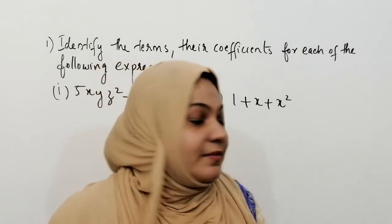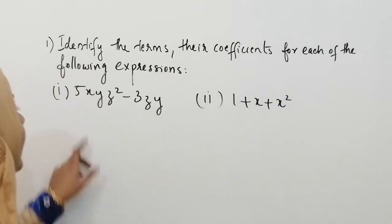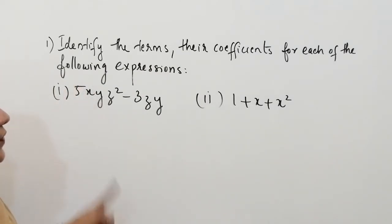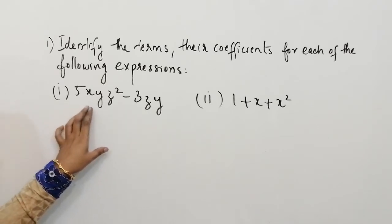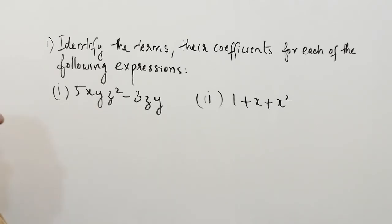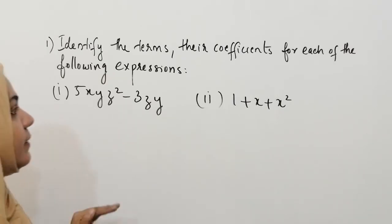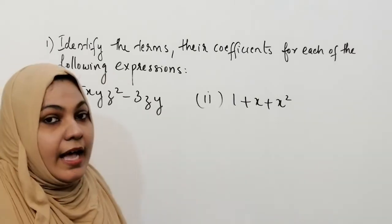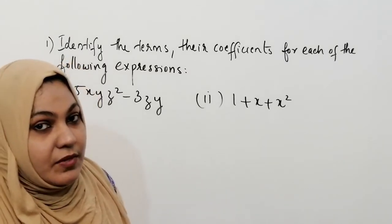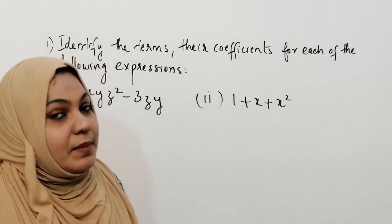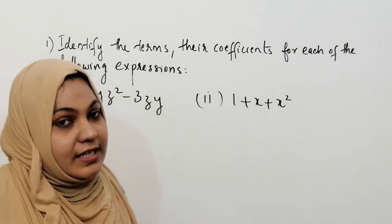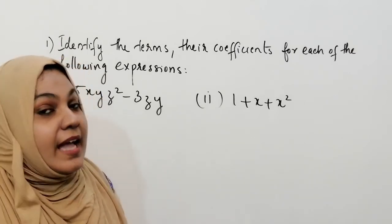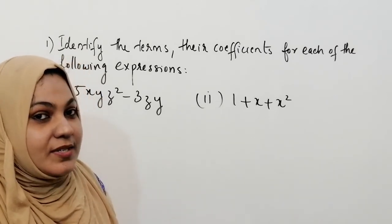Let us see what is the first question. Here you can see: identify the terms and their coefficients for each of the following expressions. The first question is 5xyz² minus 3zy. Before solving, we have to understand what are terms and what is coefficient. I already explained in my previous videos. If you are new to my channel, please watch my previous videos — I will give the link in the description box.